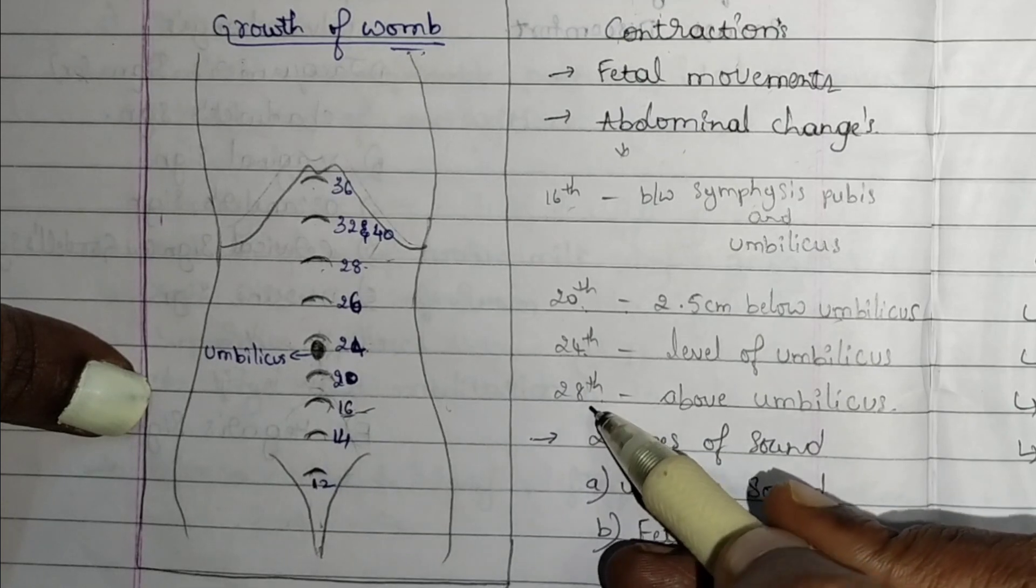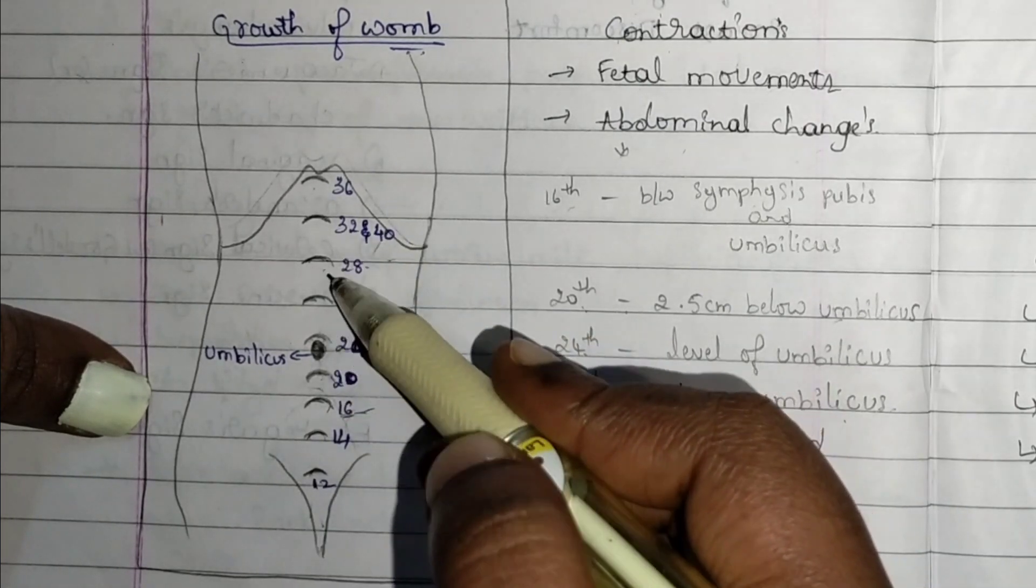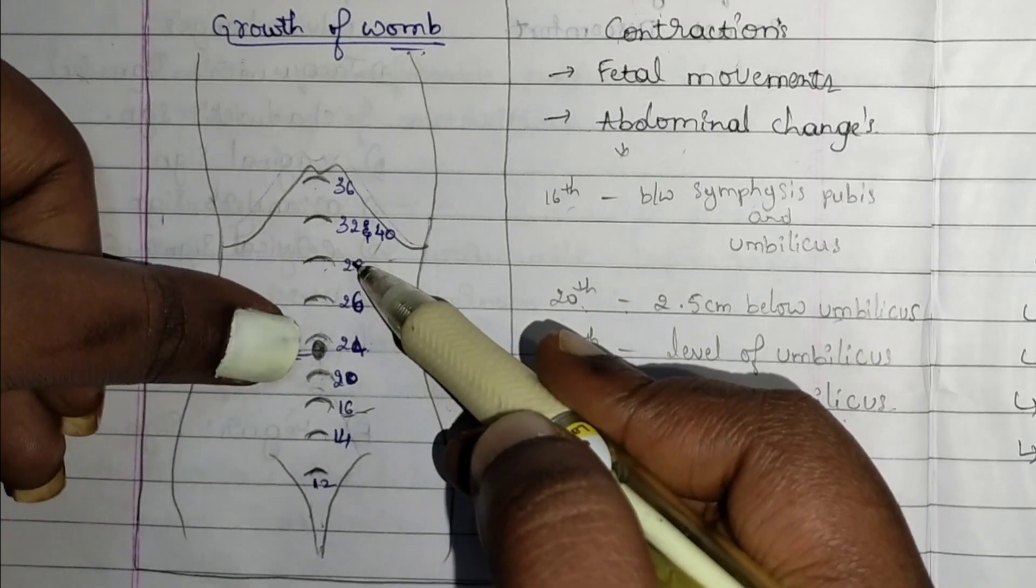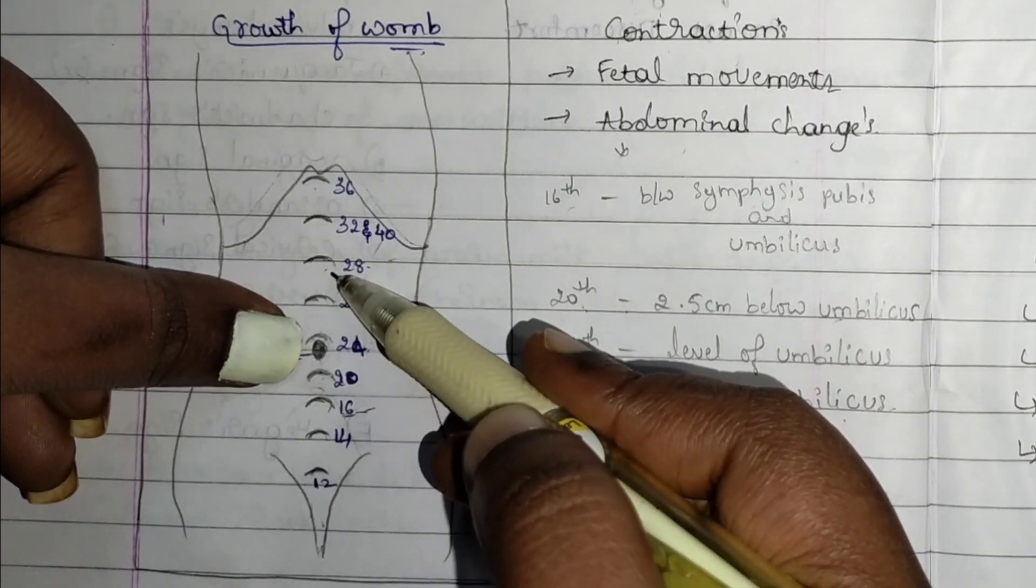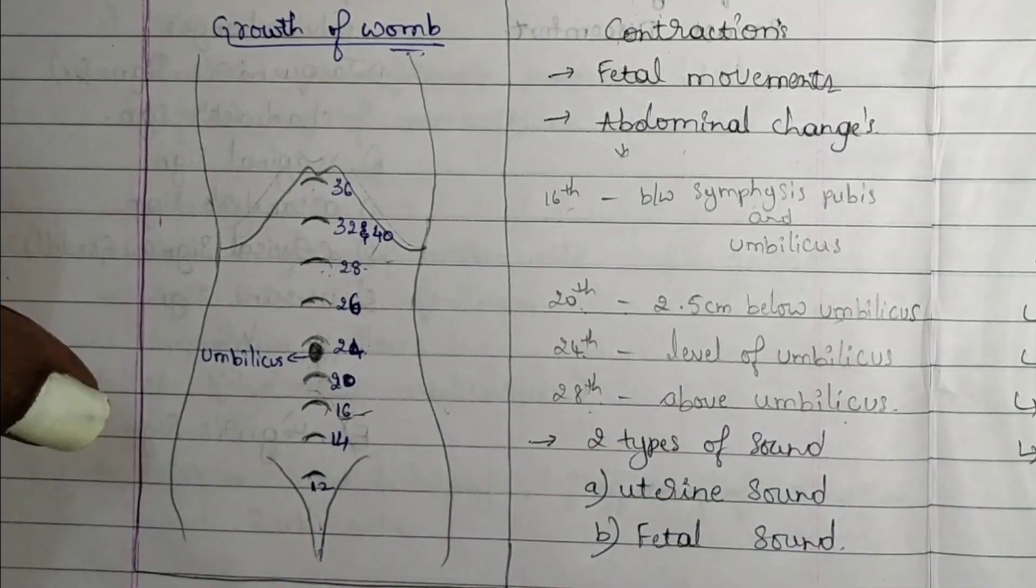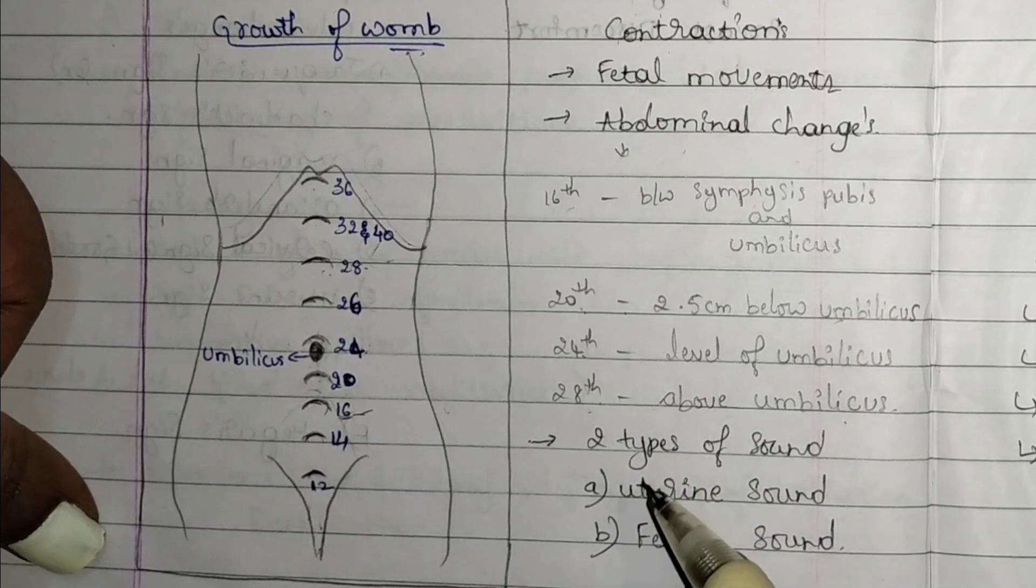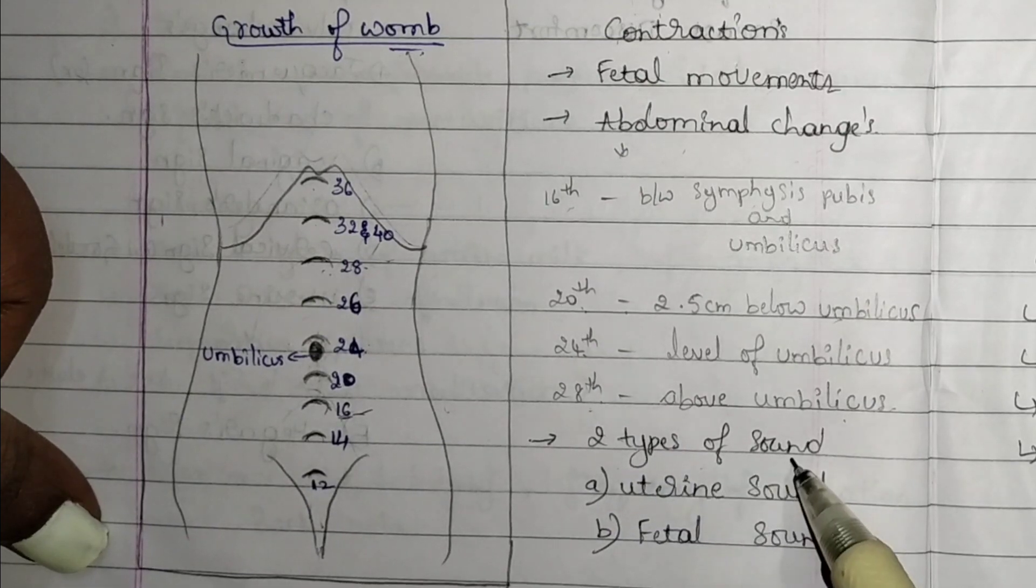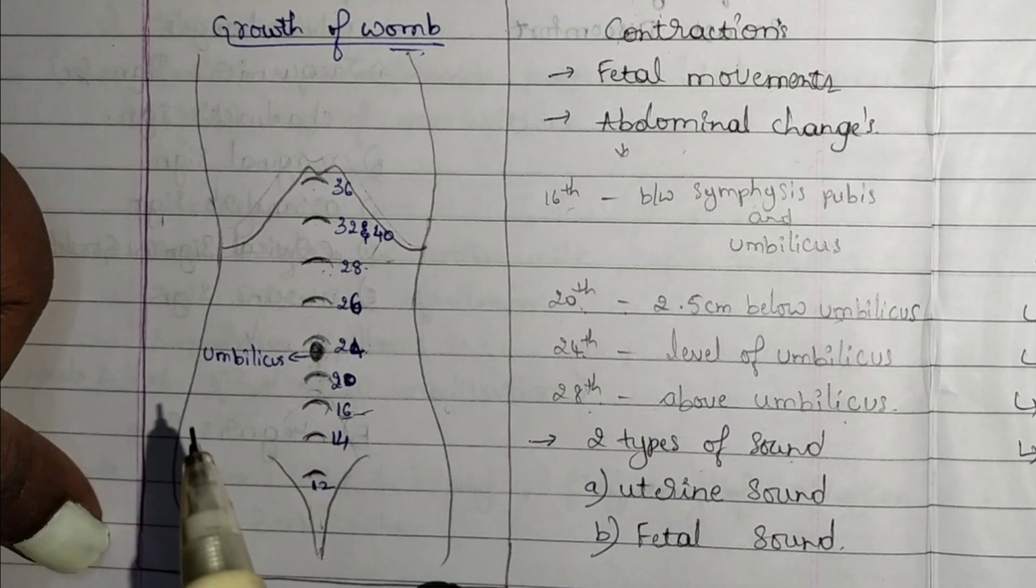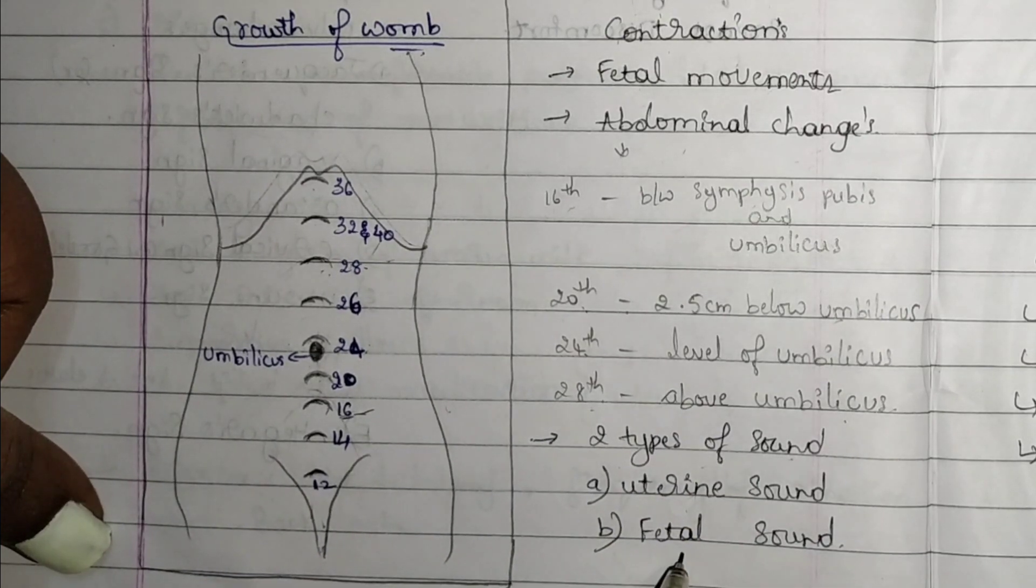At 28th week, the uterus level is above the umbilicus. During this period, you can hear two types of sounds while examining: one is uterine sound and the other is fetal sound.